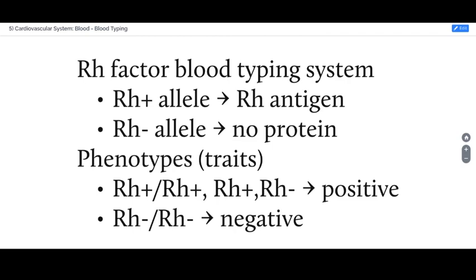Rh is an abbreviation from rhesus monkey, or rhesus macaque, which is a laboratory animal that was used in originally describing this factor. This is a more straightforward genetic situation. There are two alleles: the Rh positive and the Rh negative allele. The positive allele is dominant and makes the Rh antigen. The Rh negative allele is recessive and doesn't make a protein. If you have at least one copy of the Rh positive allele, you have the positive blood type. You have to have two copies — one from either parent — of the Rh negative allele to have a negative blood type.